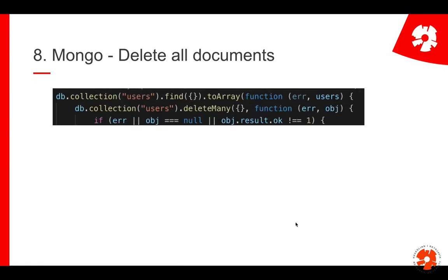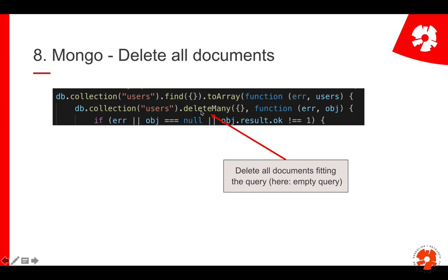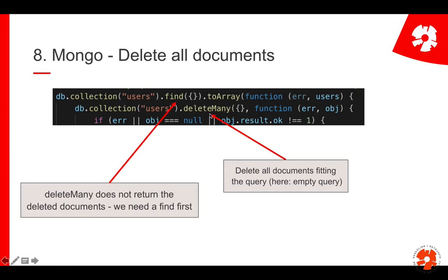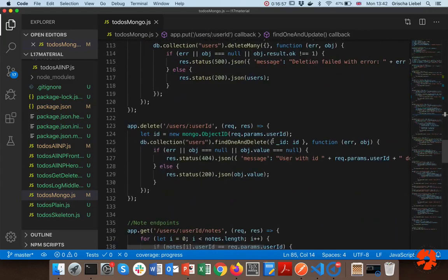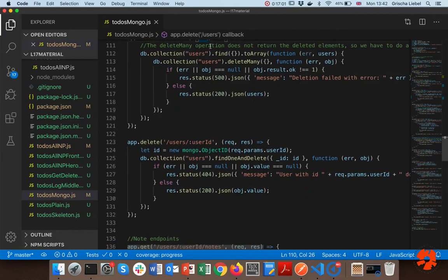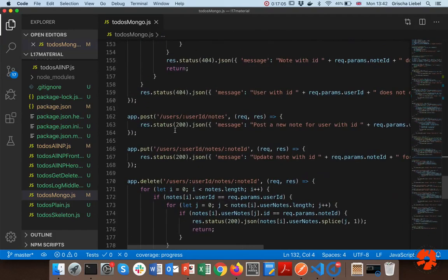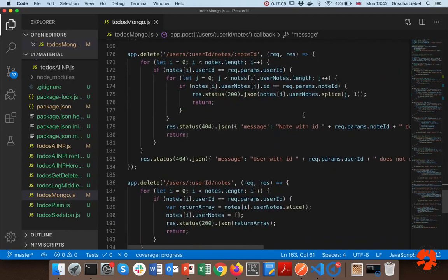For deleting, we use deleteMany with empty curly braces meaning no conditions — delete all of them. A quirk of the standard Mongo module is that deleteMany doesn't return the deleted documents. So we first get all users, and when that's successful, we delete them and return the user array. I won't implement all endpoints here — some still use for-loops. If you used a more advanced module like Mongoose, a lot of this comes for free.